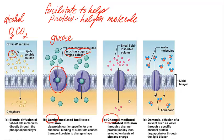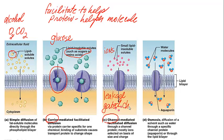The next example is channel-mediated facilitated diffusion. A common example of this is the movement of ions through different channels. We can have either leakage channels — ones that are always open and allow ions or water to move across the concentration gradient — or we could have gated channels, which are open or closed based on other electrical impulses.